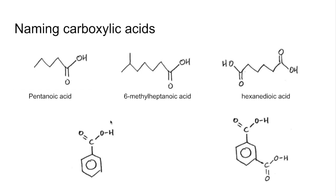We'll finish with a couple of aromatic ones. The first one is benzoic acid. And the last one has 2 carboxylic acid groups at positions 1 and 3 on the benzene ring, so it's actually called 1,3-benzene dicarboxylic acid.